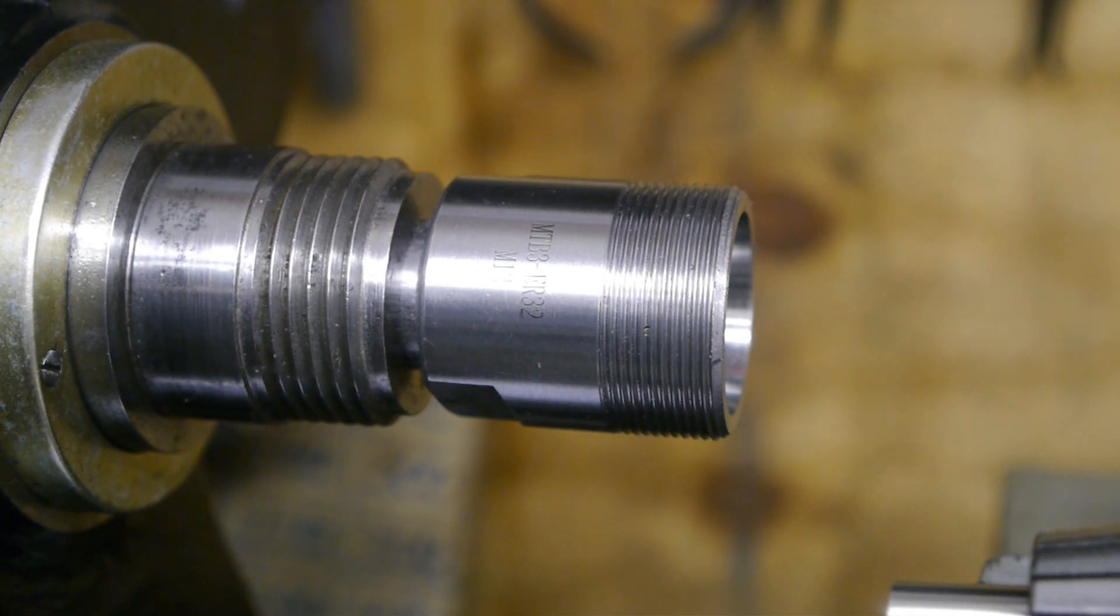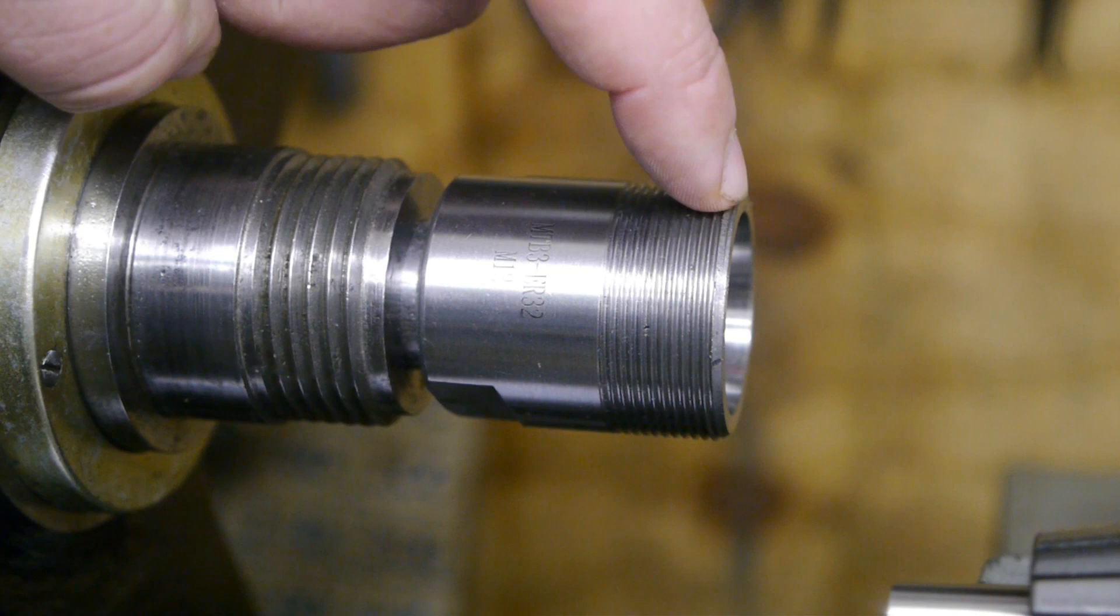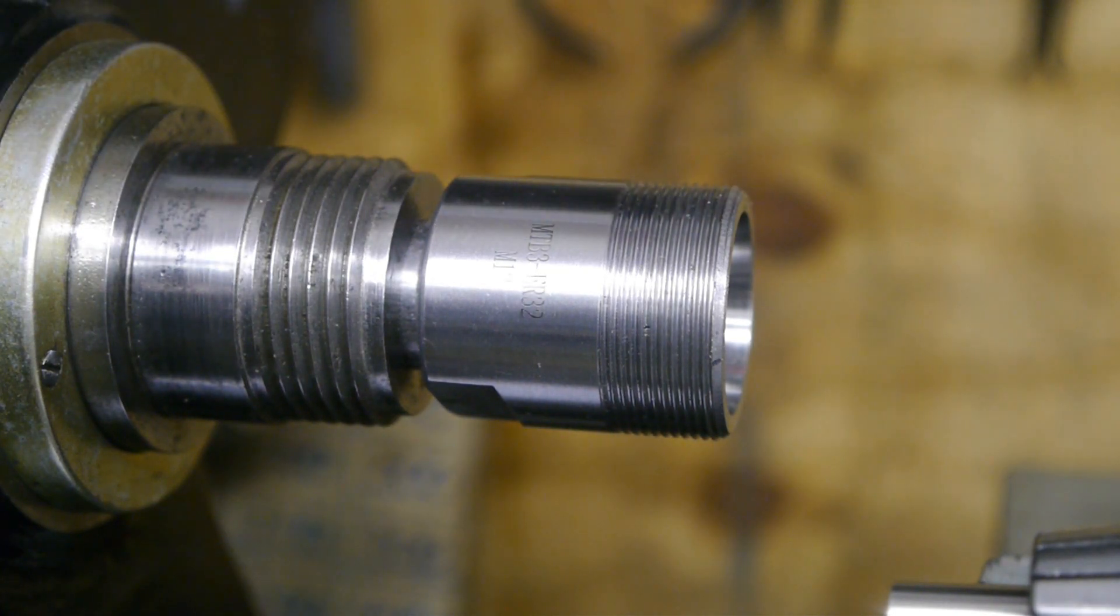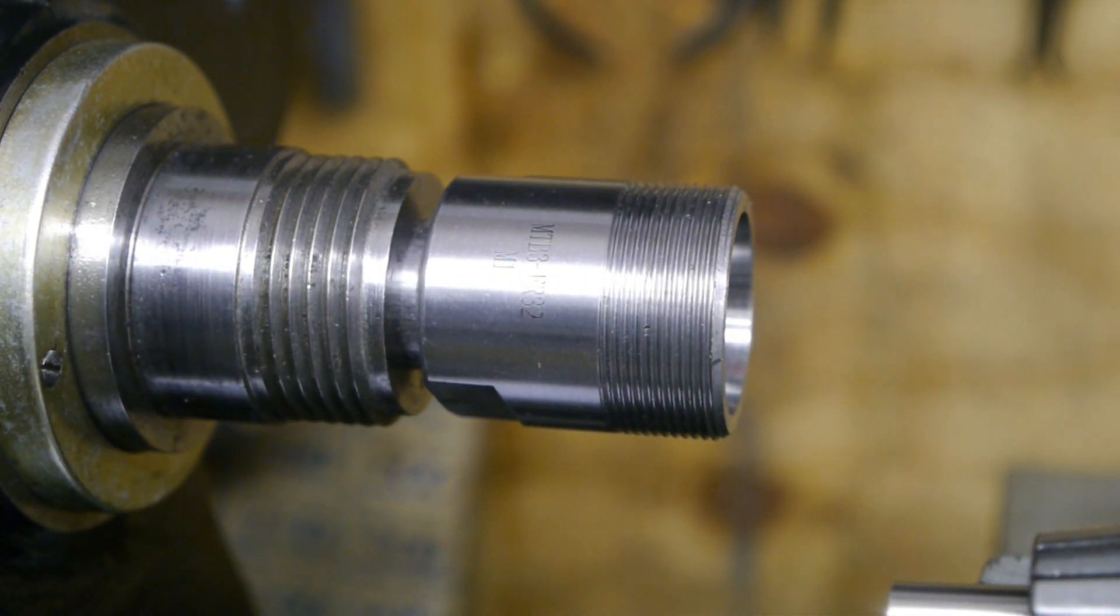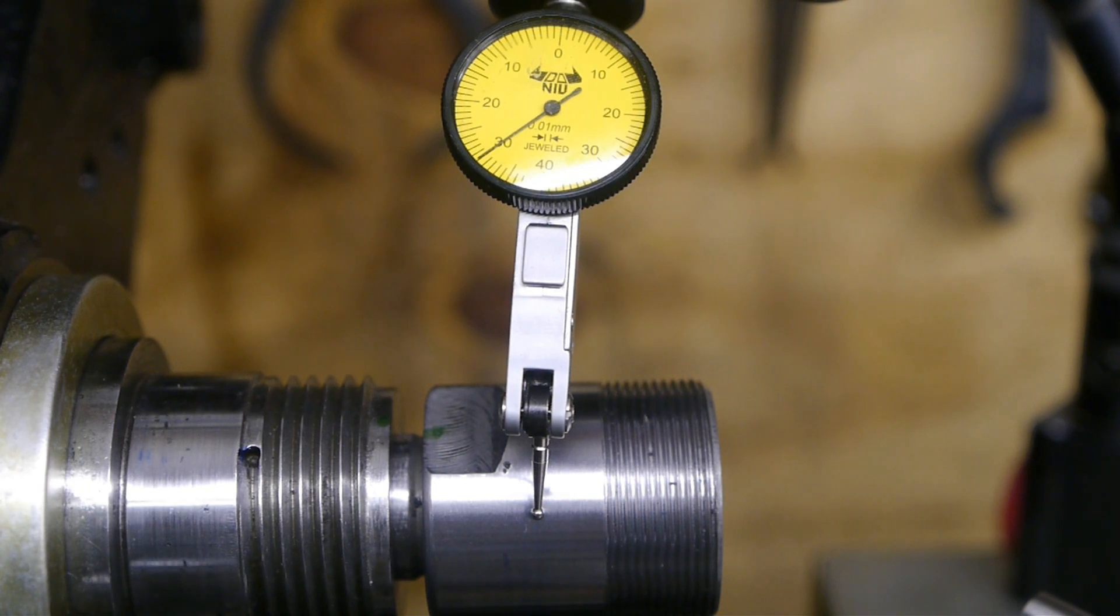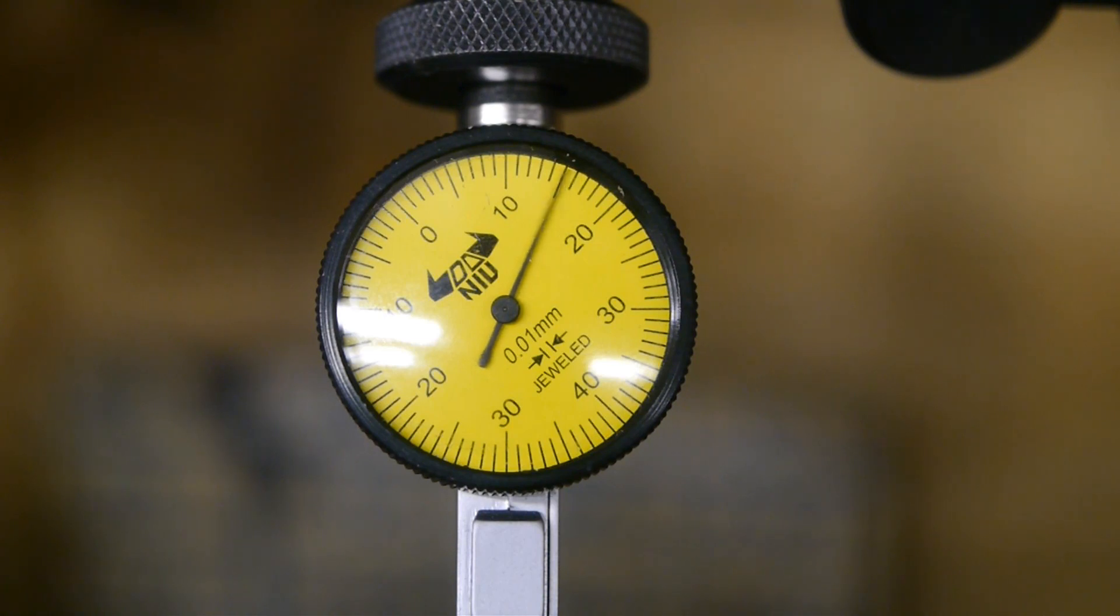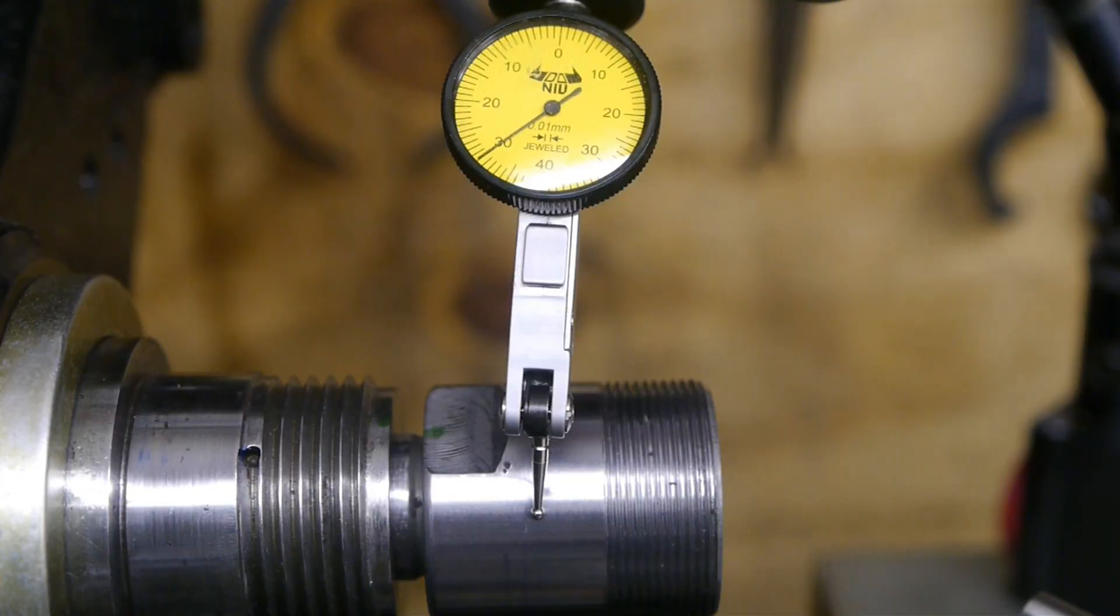Some have suggested in the comments that the thread on here might be the source of my inconsistent run out. Others have pointed their finger at the collet nut. I'm not sure, but maybe they both play a role. I already know that the outside of the chuck isn't running completely concentric with the internal taper. But I have a hard time believing that one or two hundredths of a millimeter have a huge influence on the collet run out. But what do I know? I've been wrong many times before.